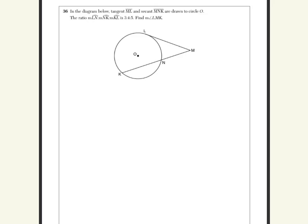So, if we put ln equal to 3x, kn equal to 4x, and lk equal to 5x, we can solve this by putting 5x, 3x, and 4x equal to 360.